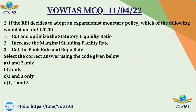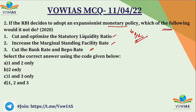Now let's look at the second question. If the RBI decides to adopt an expansionary monetary policy, which of the following would it NOT do? We have to choose the policy the RBI will not take for expansionary monetary policy — that is, increasing money supply in the economy. Options: A) 1 and 2, B) 2 only, C) 1 and 3, D) 1, 2 and 3. The correct option is B — 2 only — because increasing the marginal standing facility rate would decrease the money supply, meaning expansionary monetary policy would not take place. So the second statement is wrong.